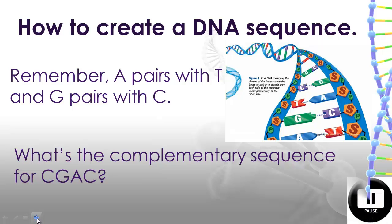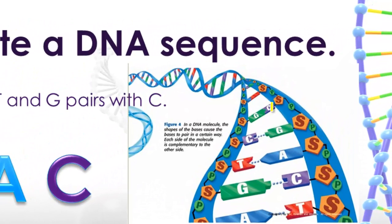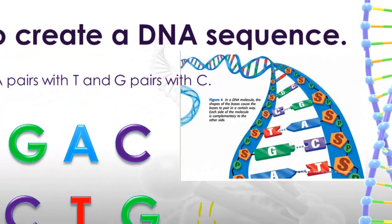Jot that down in your notes and see what you come up with. If you came up with G, C, T, G, then you're right — good job! We started off with C, G, A, C, and we can see that the complementary string of DNA would be G, C, T, G, because those bases fit together with each other.